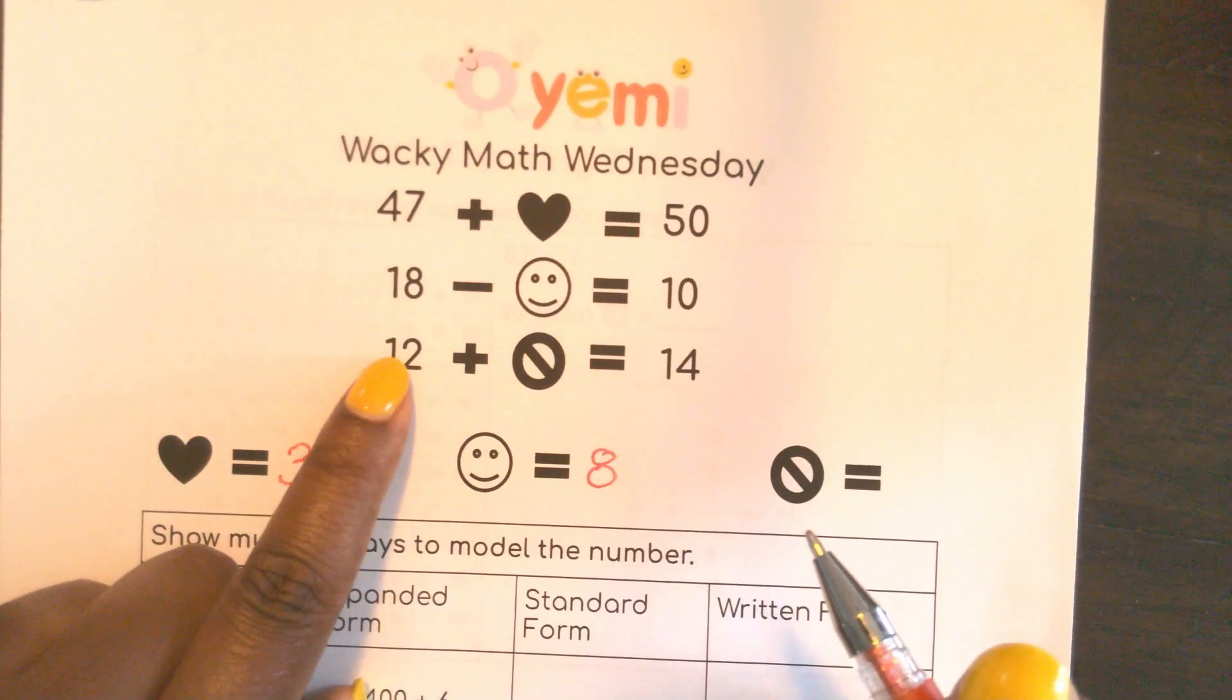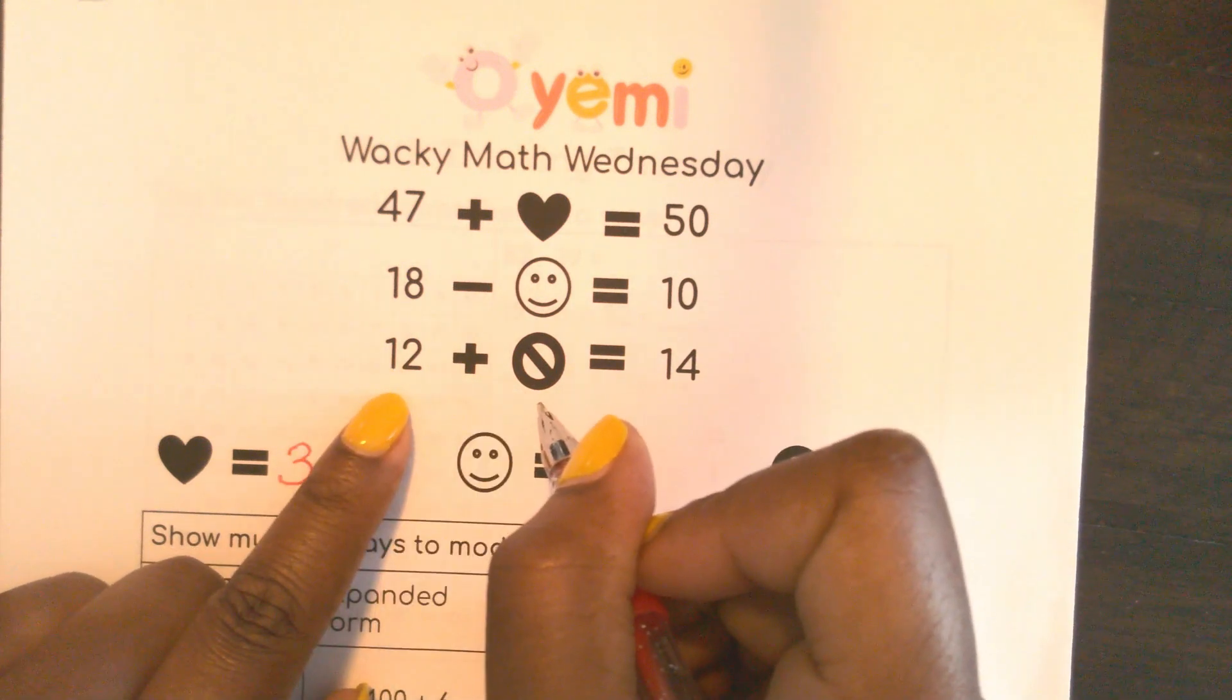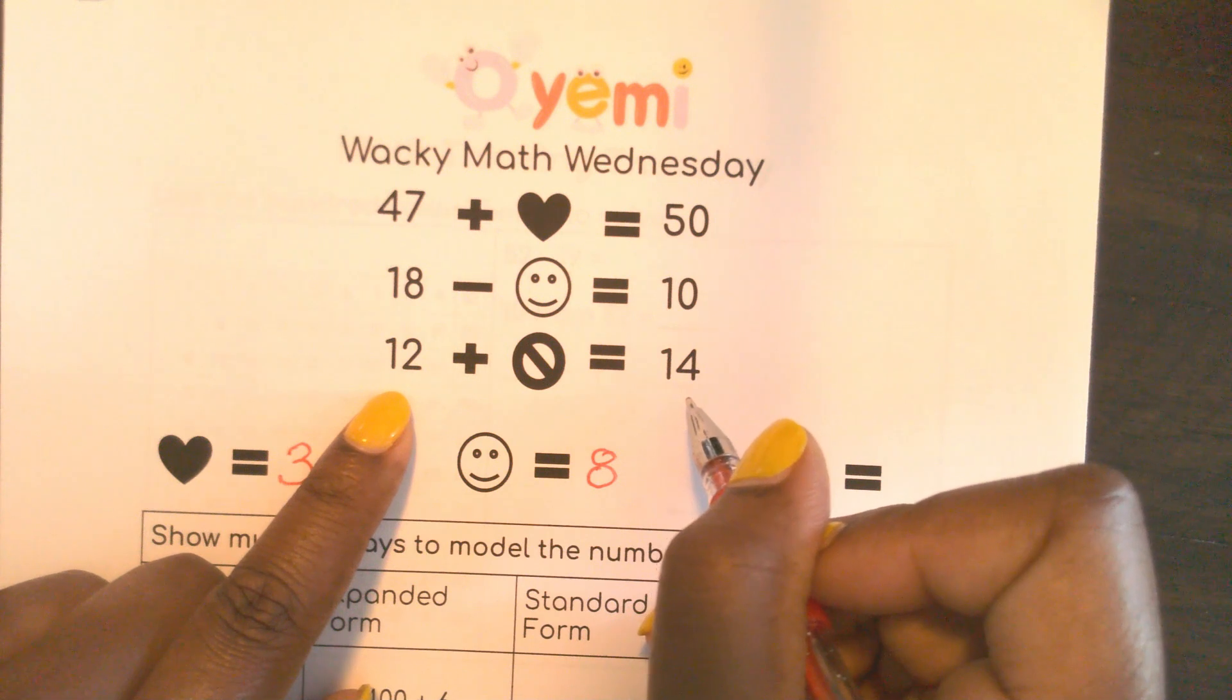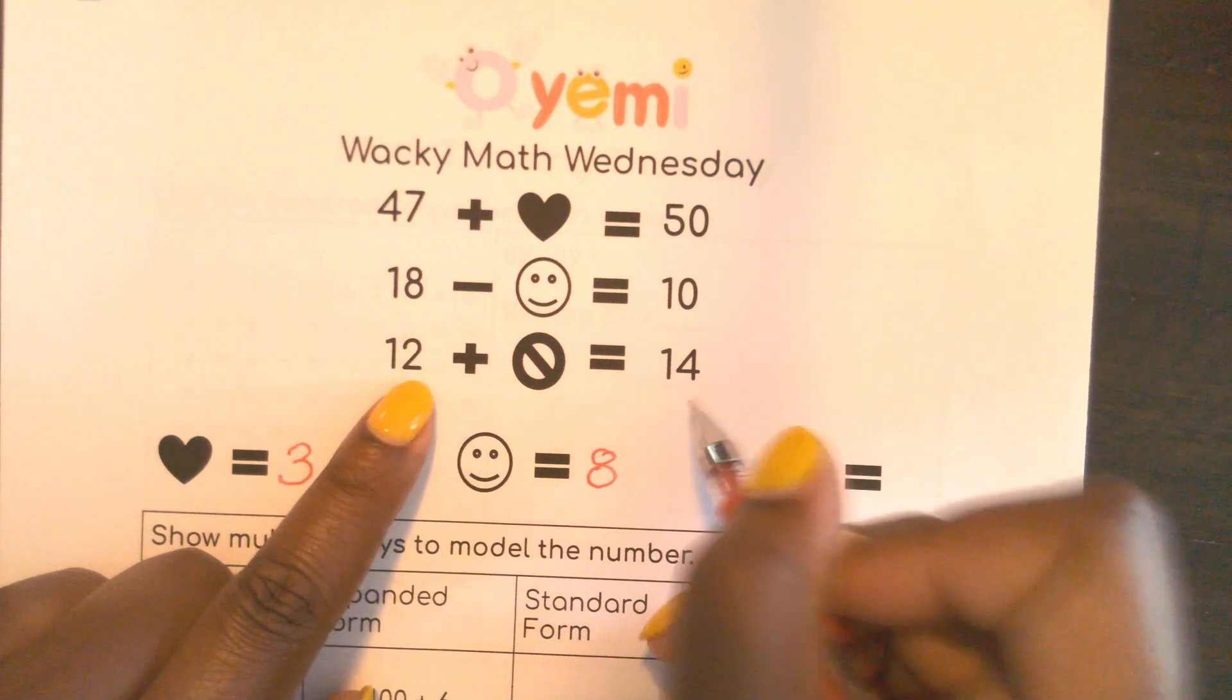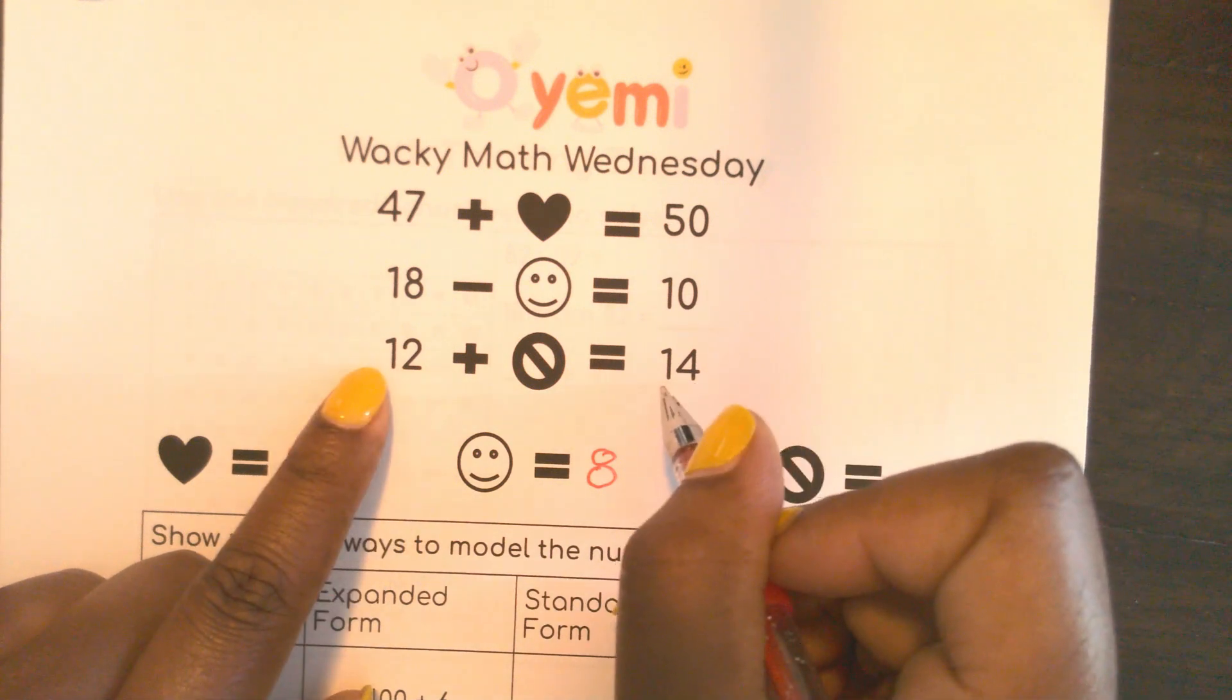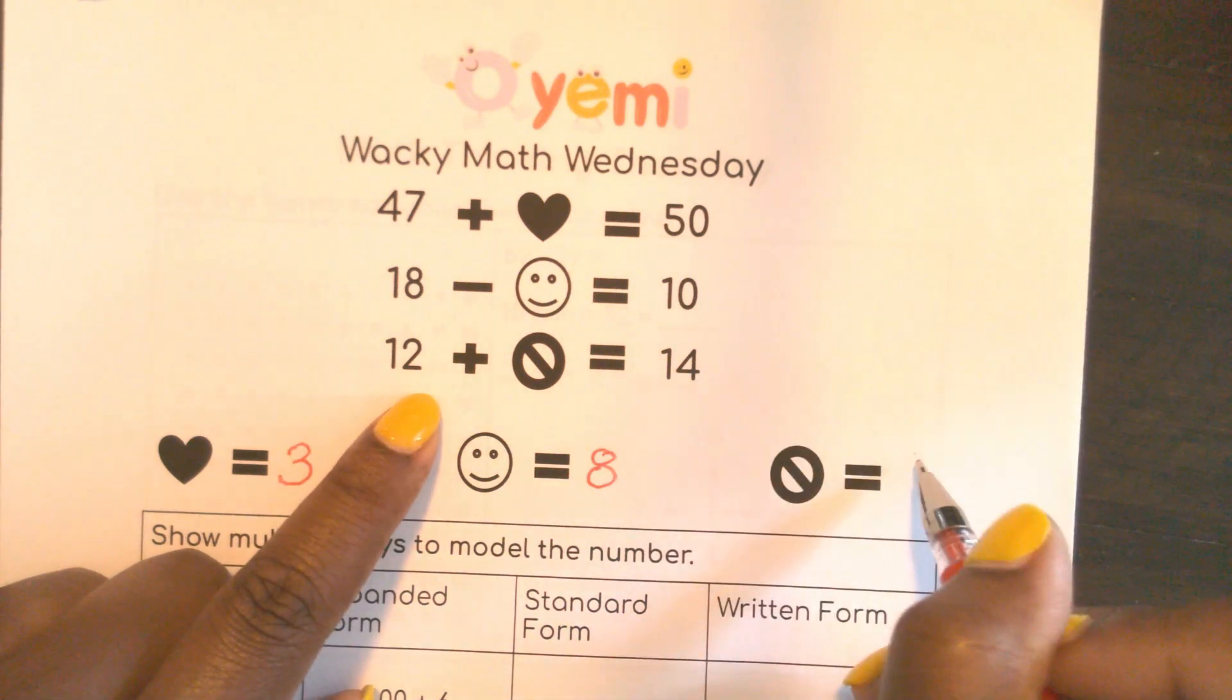Now here is 12. How much more do I need to add to get to 14? Use what you know about numbers. Two plus what equals four. And I already have my 10, so I don't have to add another 10. I just need two more.